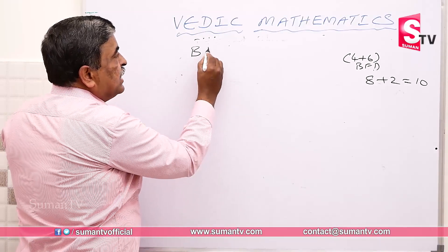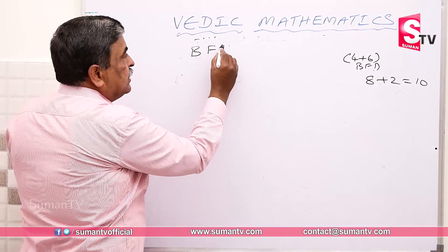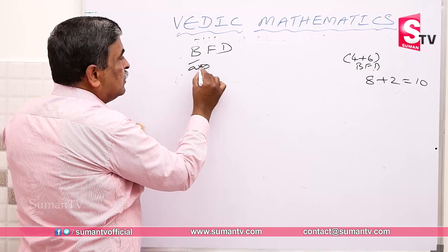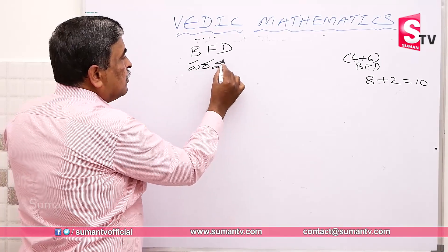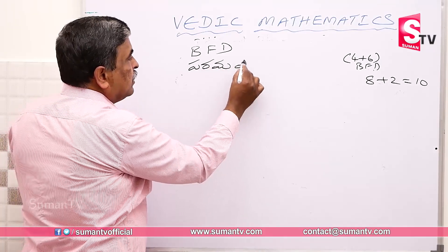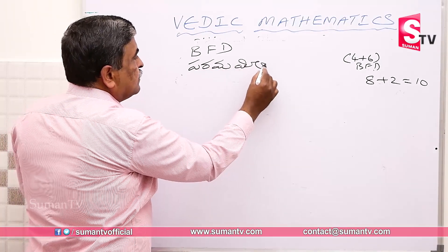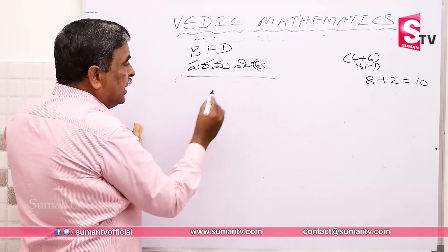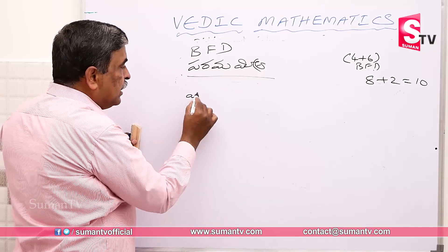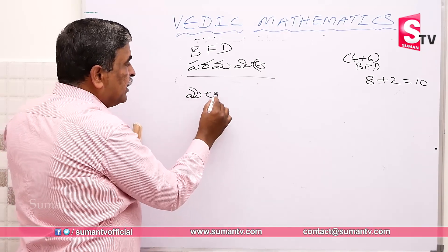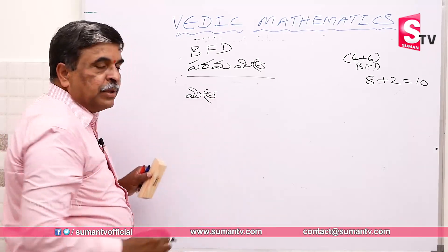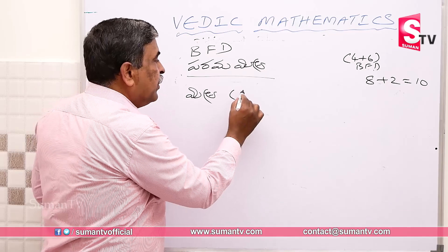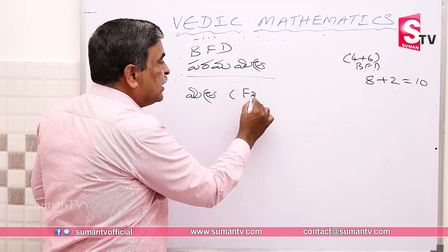Welcome to Best Friend Digits, Paramitra. We are going to say Mitra is a digit. We are going to say only friend digit.